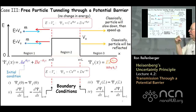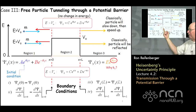When E is less than V0, the wave function in the barrier region must be represented by exponentially dependent factors: C·e^(κx) and D·e^(-κx). The task is then to determine what the coefficients A, B, C, D, and E are in order to satisfy the boundary conditions.